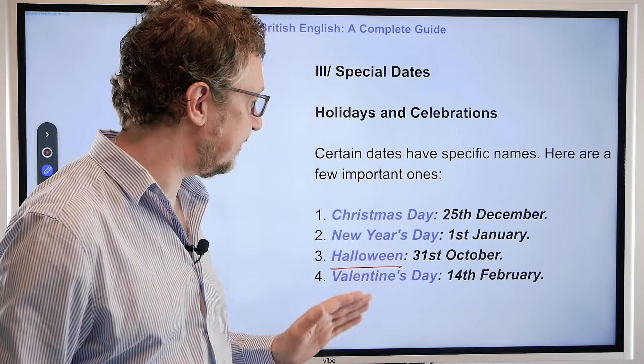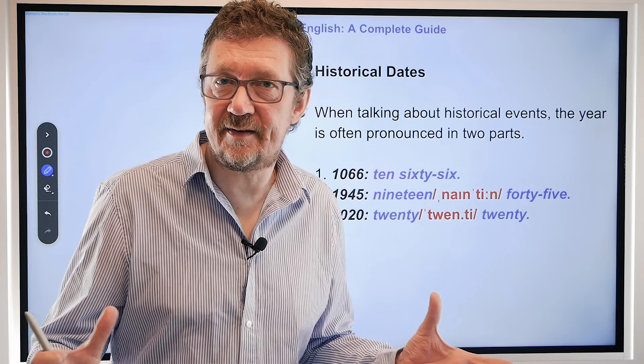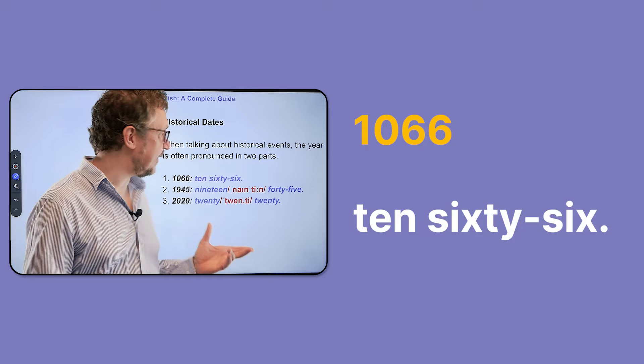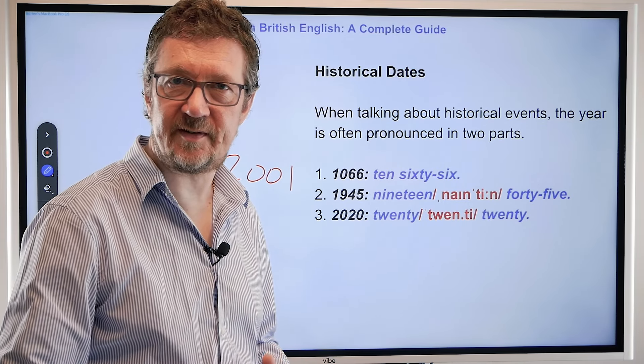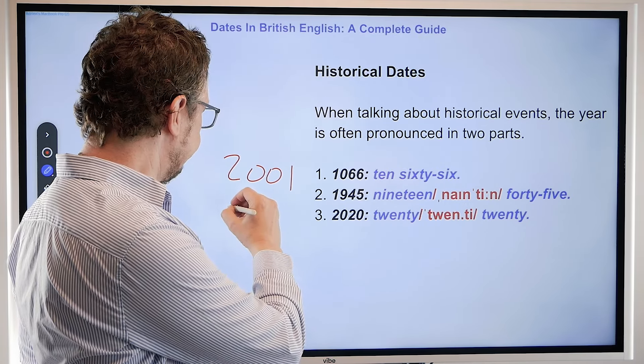When we talk about historical dates, we typically split the year into two. So we might say 1066, which was the famous Battle of Hastings, or 1945. Now, 2020 is also the way when we're talking about dates after 2020. But between 2000 and 2010 we have a choice — we can say 2001 or 'two thousand and one'. It depends which one you want to say. The same with 2010 — we can either say 2010 or 'twenty-ten'. People say it however they wish.